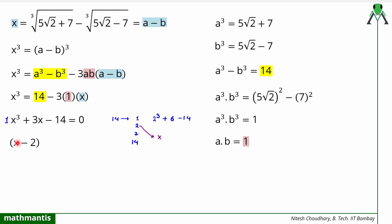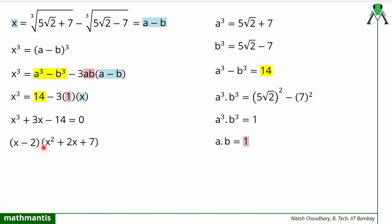This is how you simplify a cubic polynomial equation — you factorize it. Since x = 2 satisfies the equation, (x - 2) is a factor. We divide the cubic polynomial x³ + 3x - 14 by (x - 2), which gives the quotient x² + 2x + 7, and the equation becomes (x - 2)(x² + 2x + 7) = 0.